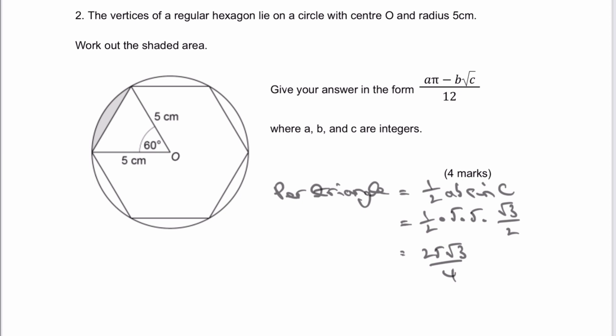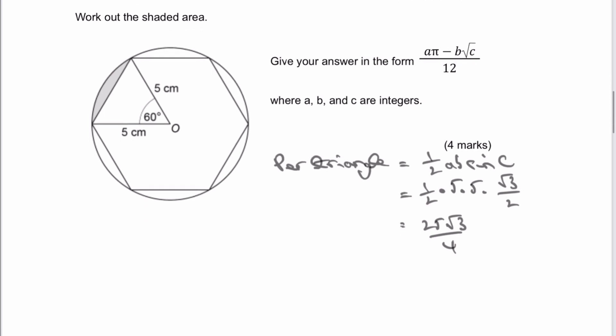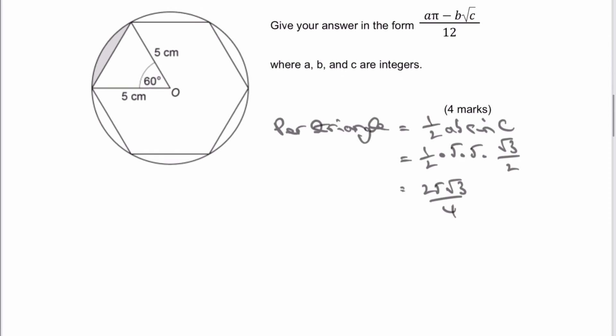So that's the area of the particular triangle. Let's have a look now at the area of the sector, and then what we're going to do is take one away from the other. So the area of the sector is going to be 60 degrees, effectively 60 degrees out of 360, multiplied by pi r squared.